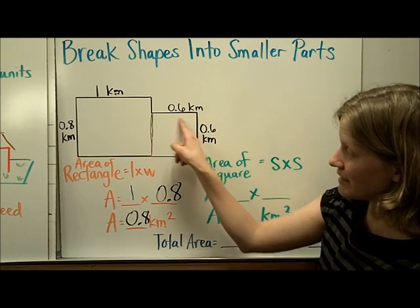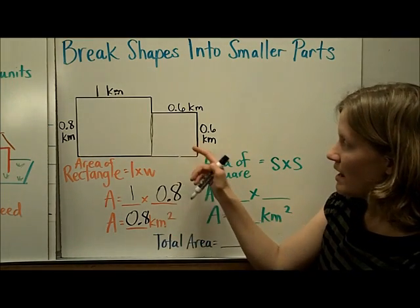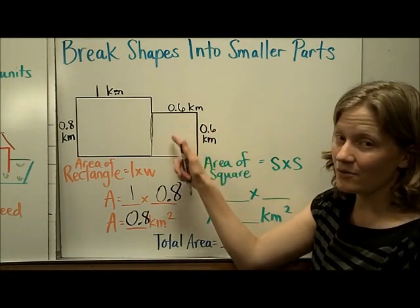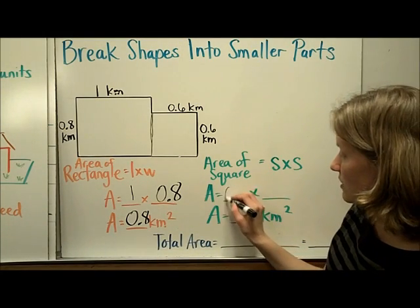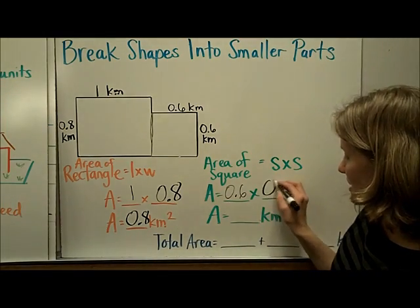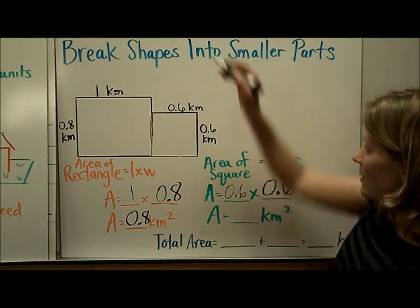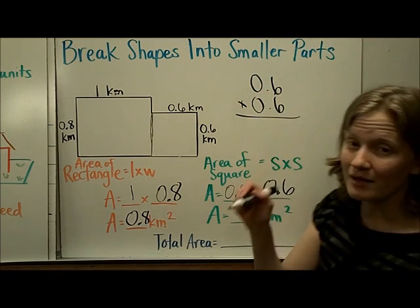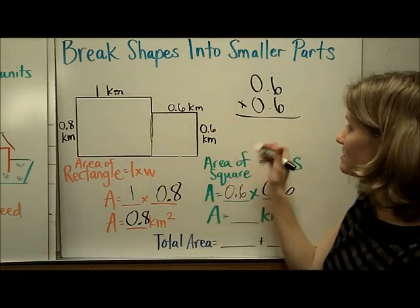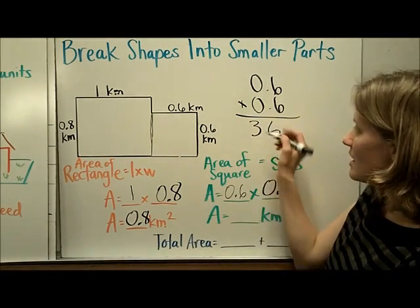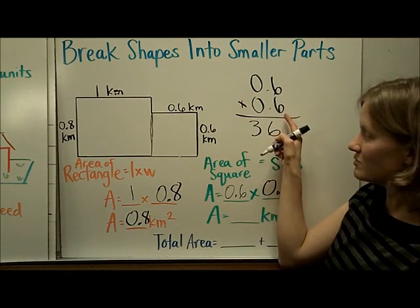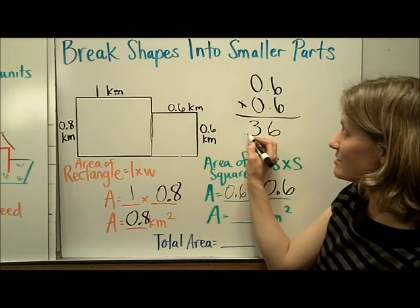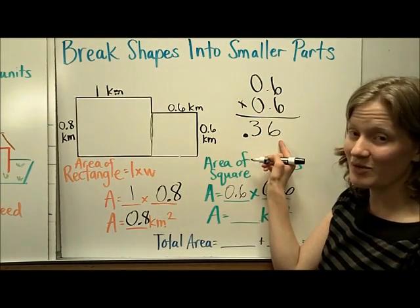Then we can also add that to the area of this square, and because the square has all sides equal, the formula is side times side in order to find the area. So I'm going to do 0.6 kilometers times 0.6 kilometers, and then we know, for multiplying decimals, that at first you just think about it like a regular multiplication problem, and you ignore the decimals. So 6 times 6 is 36, and then I have 2 digits behind the decimal point, so I'm going to place my decimal point in the answer, so that there are 2 digits behind the decimal point.